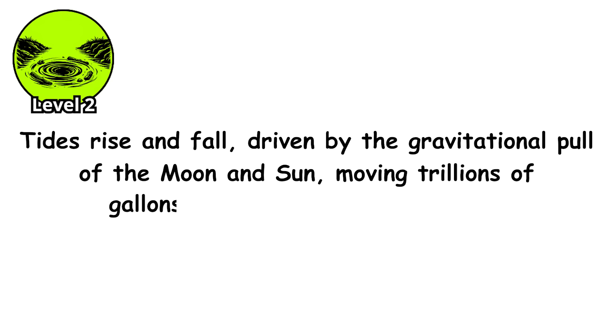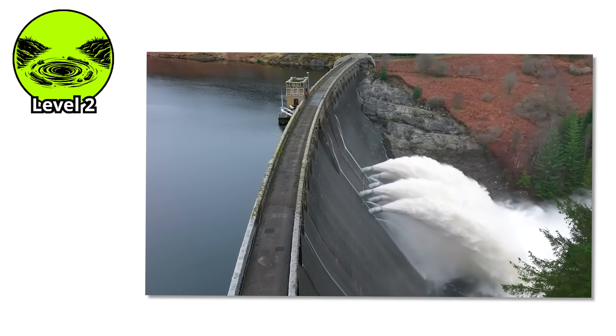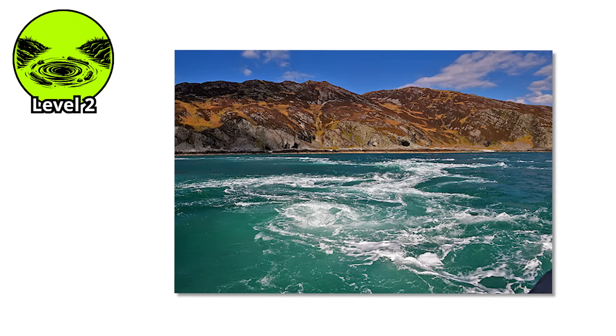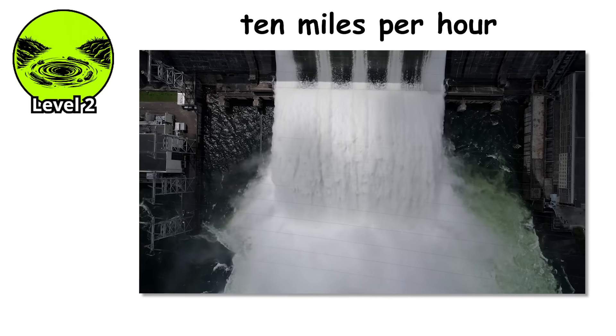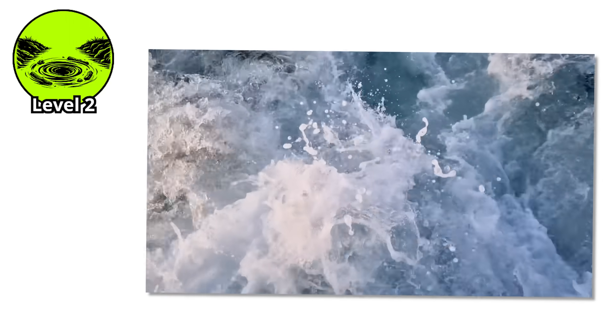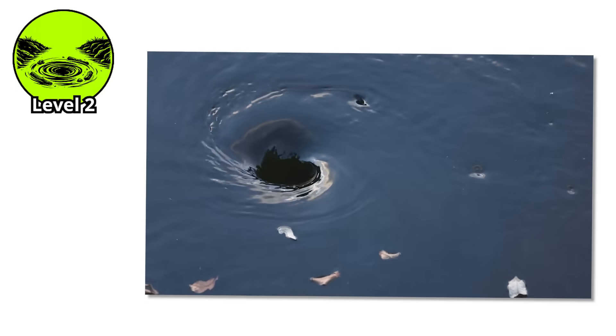Twice a day, the ocean breathes. Tides rise and fall, driven by the gravitational pull of the moon and sun, moving trillions of gallons of water across the planet. Most of the time, this happens gradually, almost imperceptibly. But when you force enormous volumes of water through narrow channels, something violent happens. Tidal whirlpools form in straits, channels between islands, and narrow passages where the seafloor creates bottlenecks. As the tide changes, water rushes through these restrictions at speeds exceeding 10 miles per hour. That might not sound fast, but water moving at that speed carries incredible momentum. And when it encounters underwater rock formations or sudden depth changes, it starts to spin.